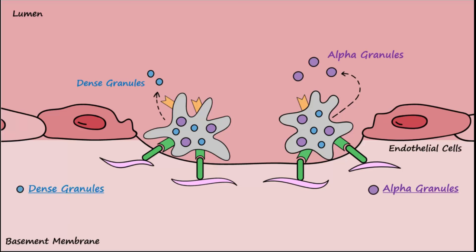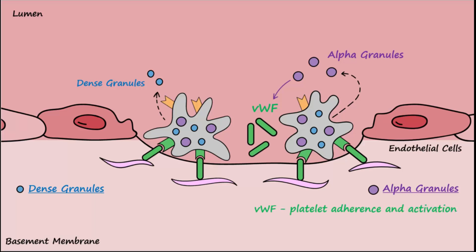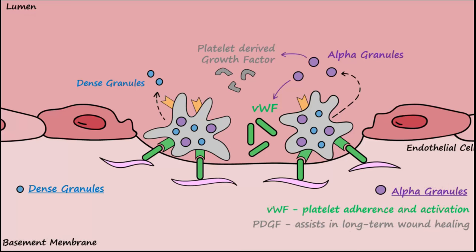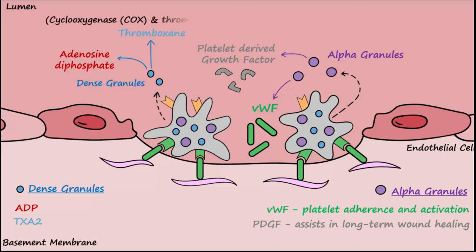Alpha granules release additional von Willebrand factor, which assists with further platelet adherence and activation. Alpha granules also release platelet-derived growth factor, abbreviated PDGF, which facilitates long-term wound healing after tissue damage. Dense granules release adenosine diphosphate, abbreviated ADP.